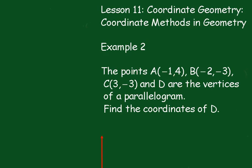Example 2. The points A(-1,4), B(-2,-3), C(3,-3), and D are the vertices of a parallelogram. Find the coordinates of D.